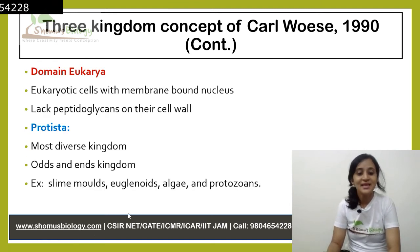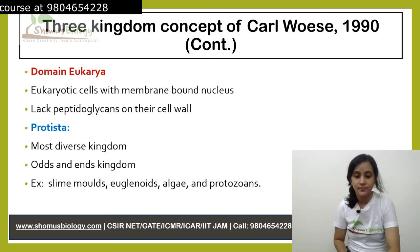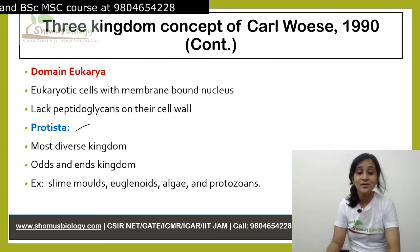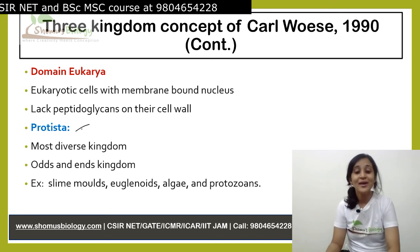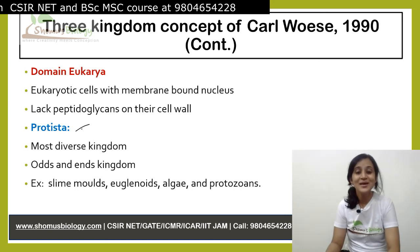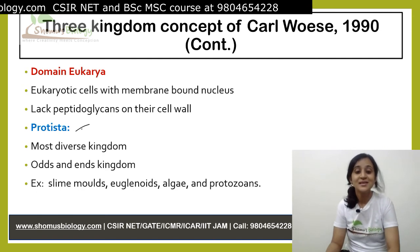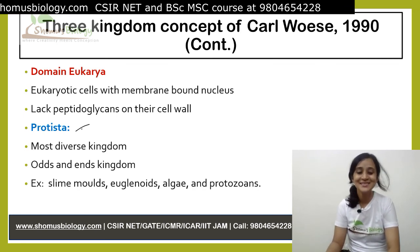Domain Eukarya. These are eukaryotic cells with a membrane-bound nucleus. They lack peptidoglycans on their cell wall. There are presently four kingdoms of Eukarya. The first is Kingdom Protista, said to be the most diverse kingdom because each of its members is so individual from each other. If an organism does not belong to any particular kingdom, it goes into Kingdom Protista — known as the 'Odds and Ends Kingdom'.